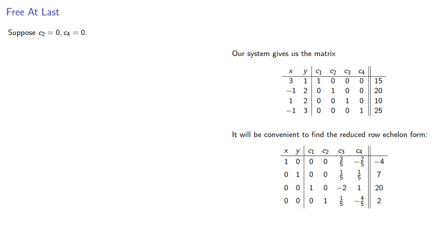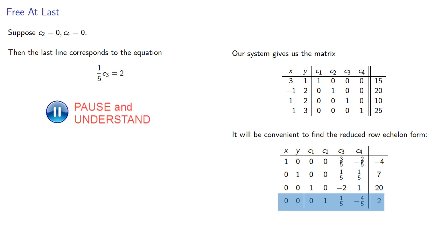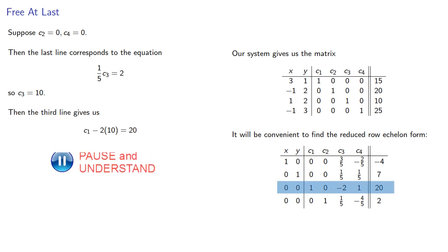So suppose c2 and c4 are zero. Then the last line corresponds to the equation, and so c3 is 10. Then the third line gives us, so c1 is 40.